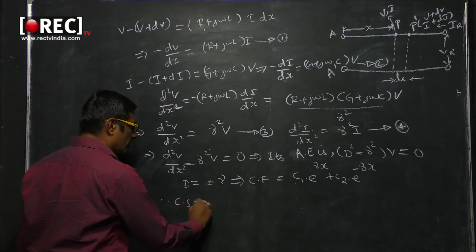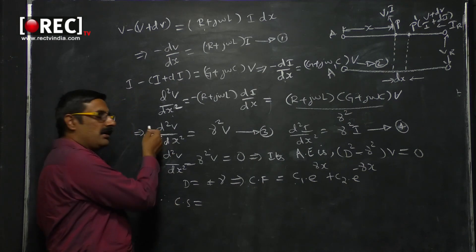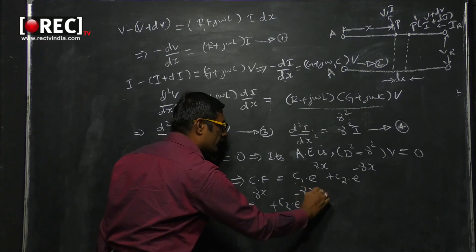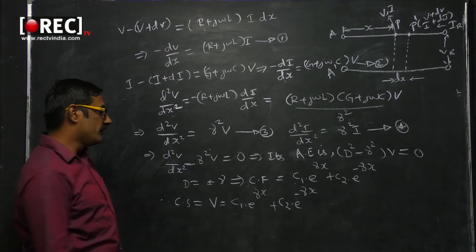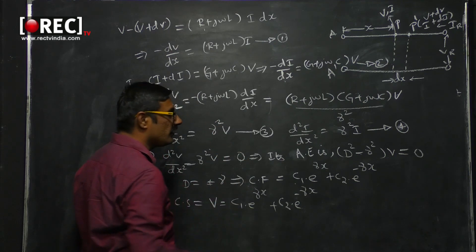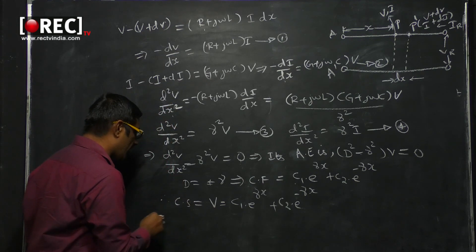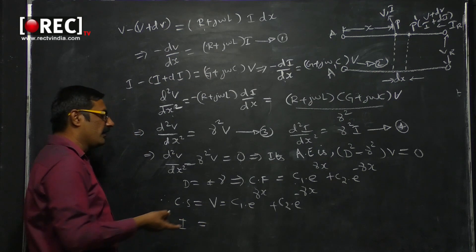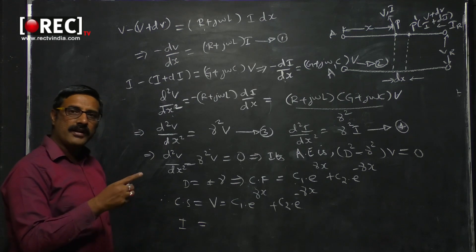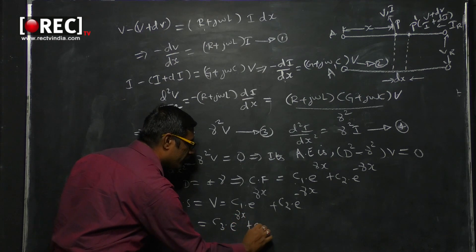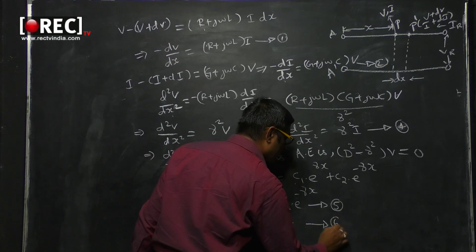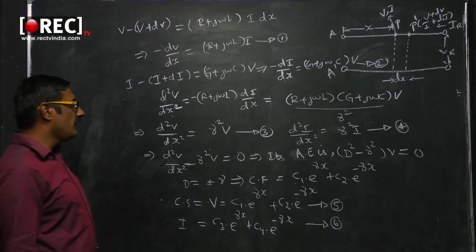Similarly for I: the complete solution is I equals C₃e^(γx) plus C₄e^(−γx). We call these equation five and equation six. Now we convert the exponential form using hyperbolic identities: e^(γx) equals cosh(γx) plus sinh(γx), and e^(−γx) equals cosh(γx) minus sinh(γx). Substituting these into equations five and six allows us to rewrite the solutions in hyperbolic form.